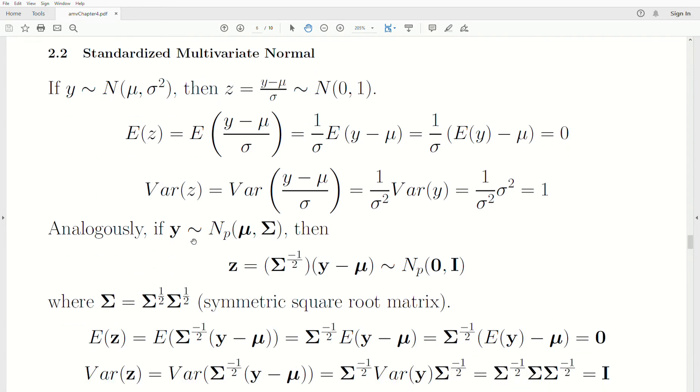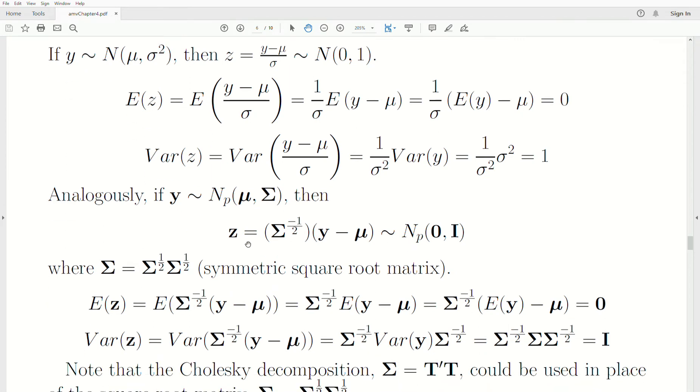Analogously, if Y is a multivariate normal distribution with P variables, mean vector mu, covariance matrix sigma, then this transformation, sigma to the minus 1 half times Y minus mu, produces a multivariate normal, standard multivariate normal distribution. Mean zeros, variance is 1, all the covariances are 0. Now this is the same transformation we used in Mahalanobis distance, and we showed that it is indeed, it does standardize the variables.